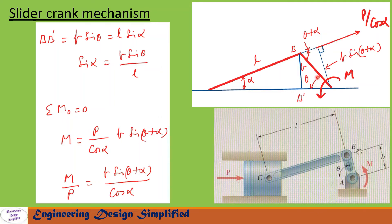Since this angle is theta and this angle is alpha, the angle between the perpendicular line and the crank will be (θ + α). Therefore, this perpendicular length will be b·sin(θ + α), since the crank length is b and this angle is (θ + α). So the perpendicular distance from A to the line of action of force P/cosα is b·sin(θ + α).